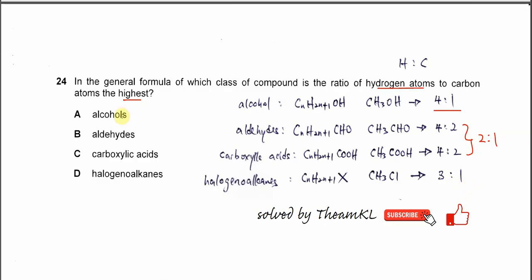Now compare all these functional groups or answers. We know that alcohol has the ratio of hydrogen atom to carbon that is the highest, which is 4 to 1. Answer therefore is A. That's all, thank you.